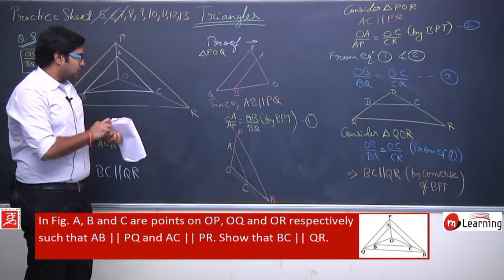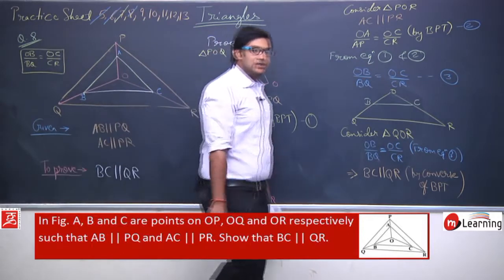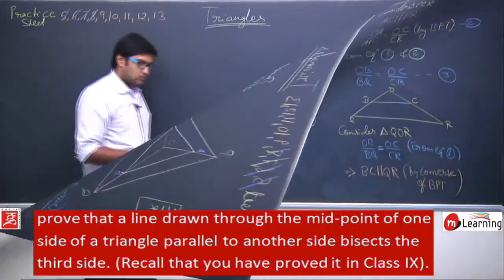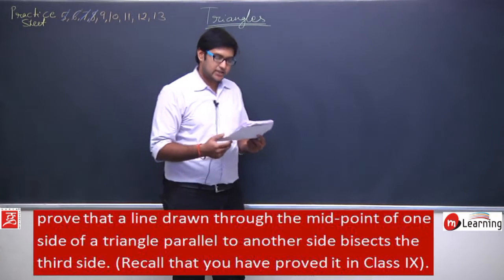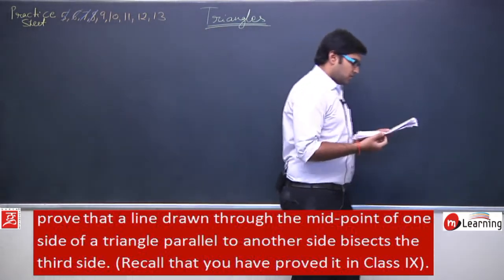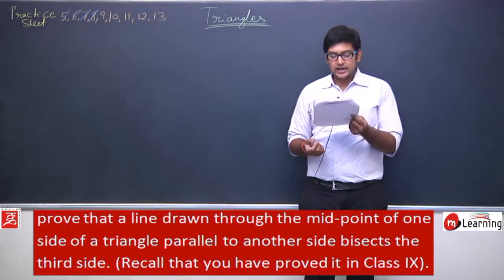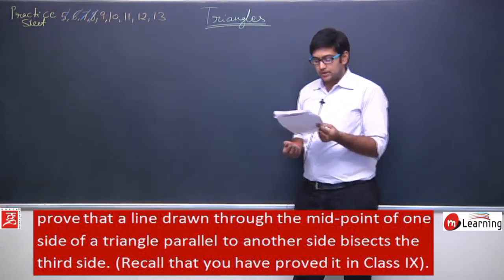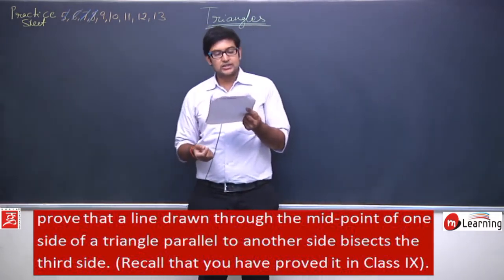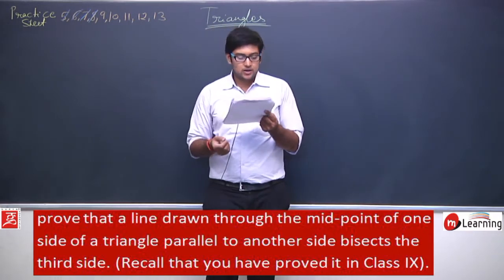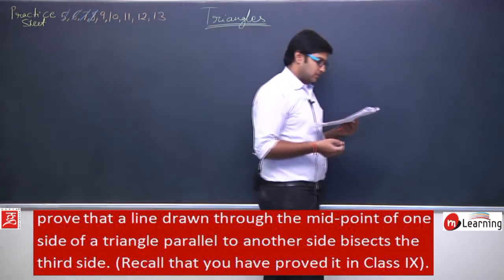This is the solution for question number 8. Please note it down, then we will continue. Now let us solve question number 9: Prove that the line drawn through the midpoint of one side of a triangle, parallel to another side, bisects the third side.